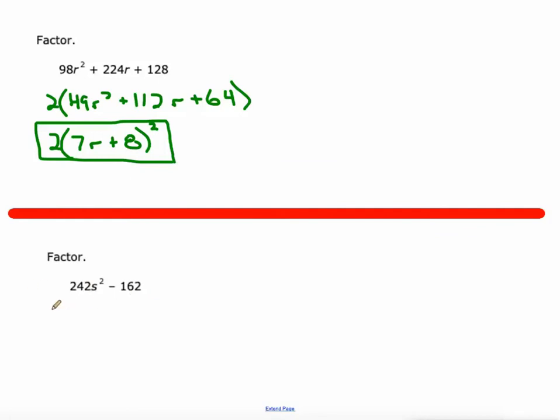Down here again, this is not the difference of squares. However they are both divisible by two. It might be divisible by other things as well, but if I factor out that GCF I get 121s squared minus 81. And now I do have a perfect square minus a perfect square. So we can write that as two times 11s plus 9 times 11s minus 9.